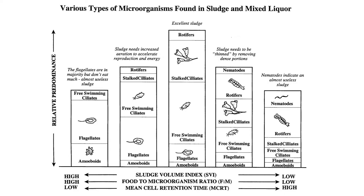There are six major categories of microorganisms in the sludge: amoeba, flagellate, swimming ciliate, crawling ciliate, stalked ciliate, and rotifer.